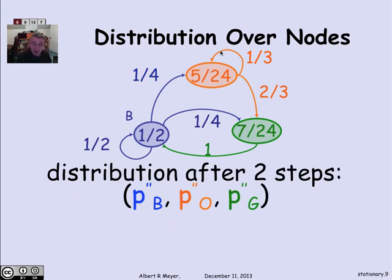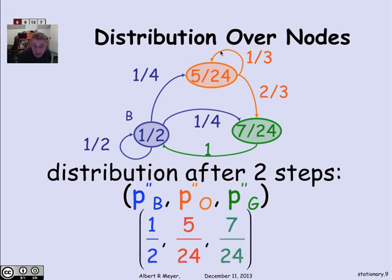The same calculation lets you figure out the probability of being at the blue or green state after two steps. There's a 1/2 chance of being at the blue state after two steps, 5/24 at the orange state, and 7/24 is the probability of being at the green state.